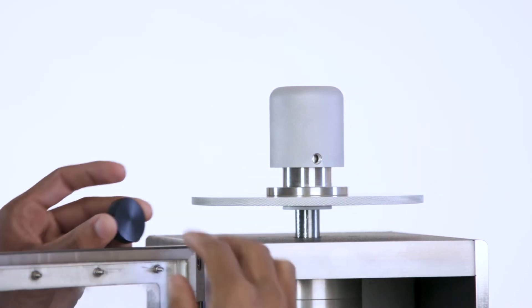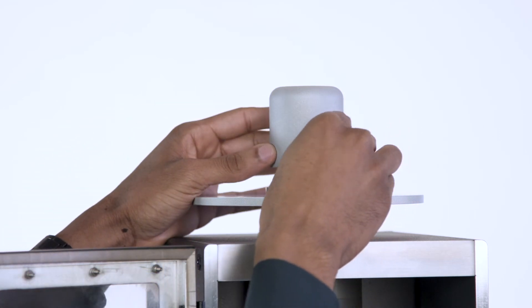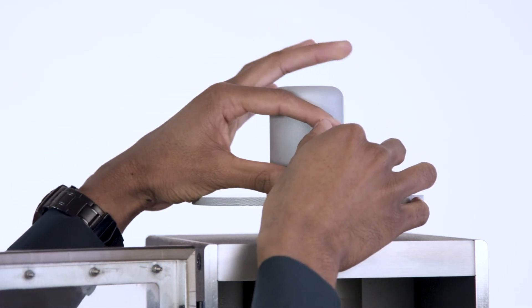When the height is sufficient, turn the set screw knob clockwise to lock the topper back into place.